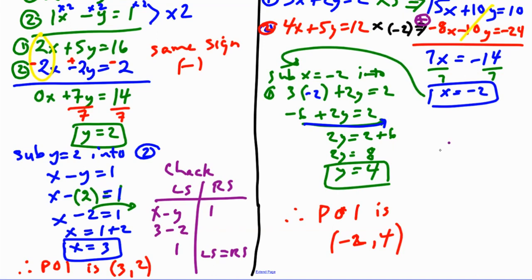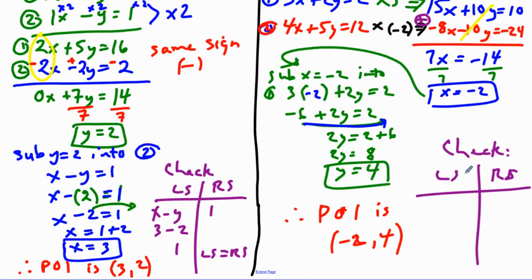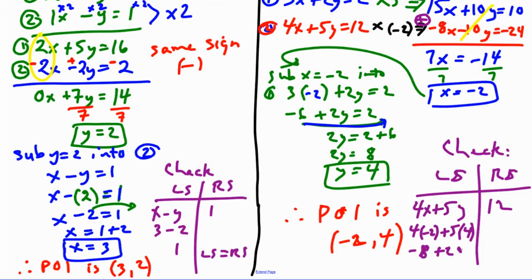We can check using equation 2: 4x plus 5y equals 12. Substituting x equals negative 2 and y equals 4: 4 times negative 2 plus 5 times 4 equals negative 8 plus 20 equals 12. Left side equals right side — correct.